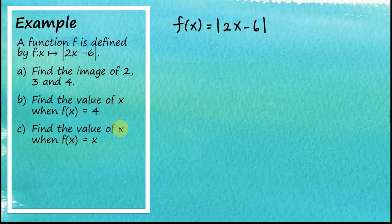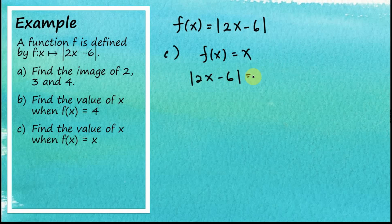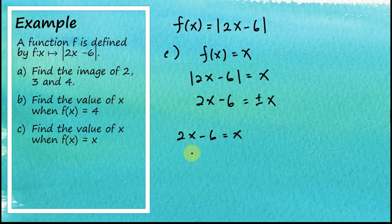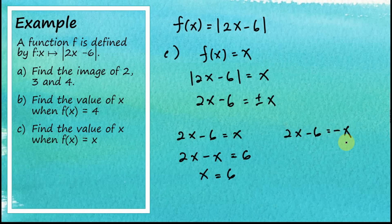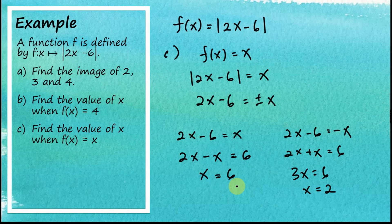For part (c), find the values of x when f(x) = x. This means |2x − 6| = x. Case one: 2x − 6 = x, so 2x − x = 6, giving x = 6. Case two: 2x − 6 = −x, so 2x + x = 6, giving 3x = 6 and x = 2. Therefore when f(x) = x, x can be 6 or 2.